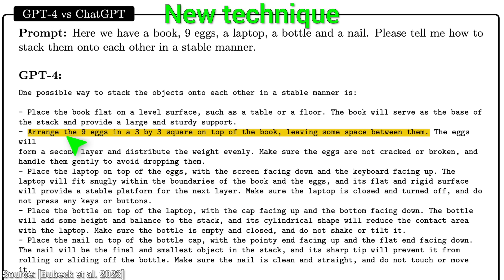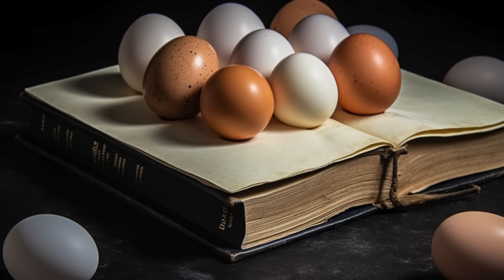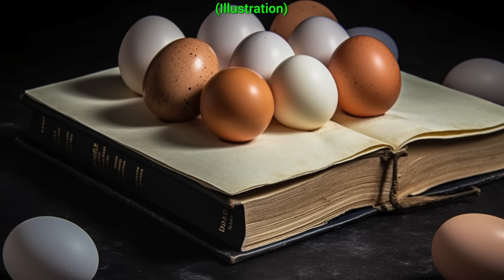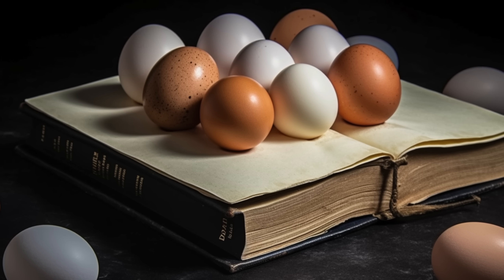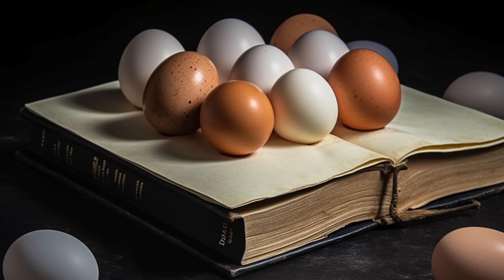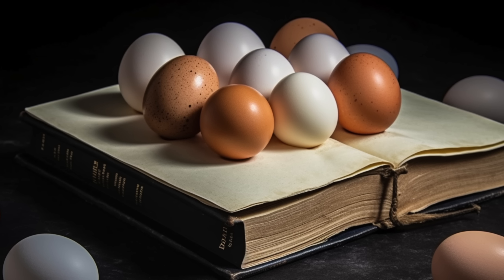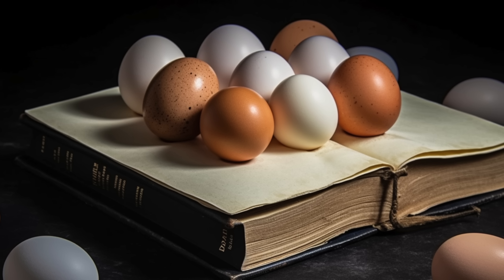Quote, arrange the nine eggs in a three by three square on top of the book, leaving some space between them. The eggs will form a second layer and distribute the weight evenly. Make sure the eggs are not cracked or broken, and handle them gently to avoid dropping them. Now that's what I'm talking about. Checkmark!